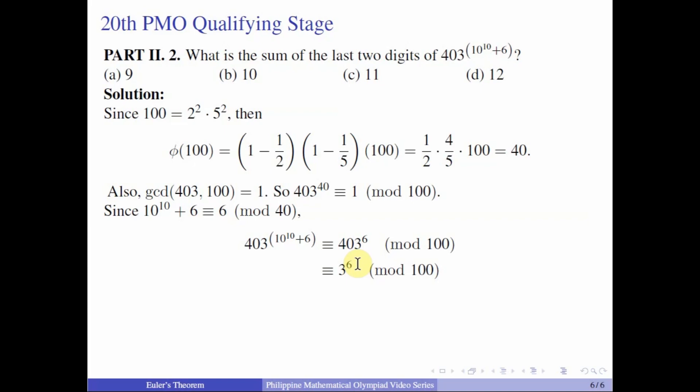And we know that 3 to the 6 is 729. And then just divide this by 100 and take the remainder, which is 29 mod 100. Since we want to get the sum of the last two digits, so let us just add 2 and 9 to get 11. And so the answer is letter C, 11.